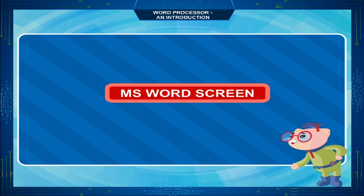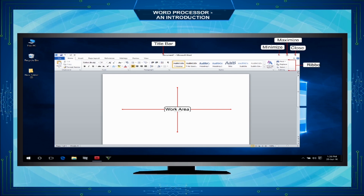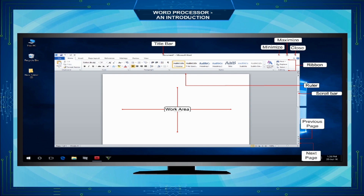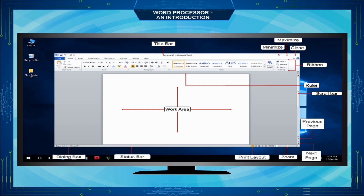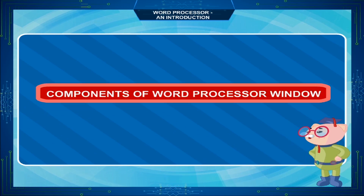The following graphic illustrates the elements of Word 2010: Title bar, Minimize, Maximize, Close, Ribbon, Ruler, Scroll bar, Previous page, Next page, Zoom, Print layout, Status bar, Dialogue box, Cursor, Menu bar, and Quick Access Toolbar.